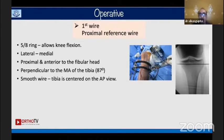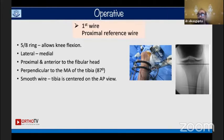The first wire is always a proximal reference wire — a common mistake to avoid. I use a five-eighths ring which allows knee flexion. It should be a lateral-to-medial wire just proximal and anterior to the fibular head. The MPTA is 87 degrees, not exactly parallel to the tibial articular surface — it makes a three-degree offset. In the fluoroscopic view it appears closer to the medial articular surface; if you align the frame parallel to the articular surface, you will have a valgus frame.